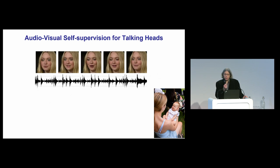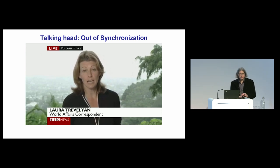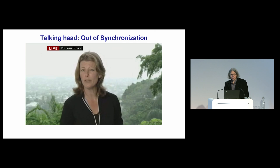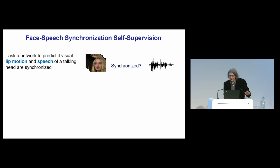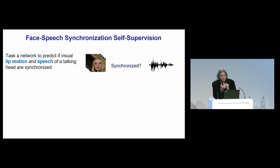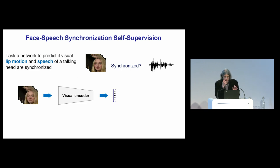We as humans are very sensitive to lack of synchronisation in talking heads — it's very annoying when it's out of sync. So now, how we're going to train the network: we're going to train it to tell if the lip motion in a video sequence is synchronised with the audio or not. We give it a video clip and the audio, and ask: are these synchronised? That's going to be the training signal.